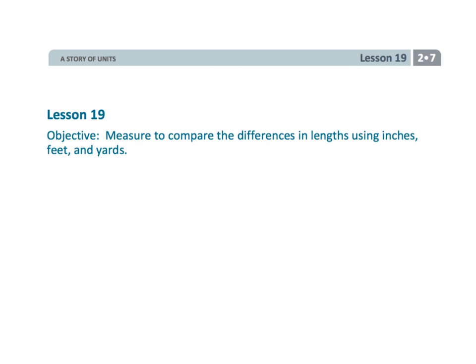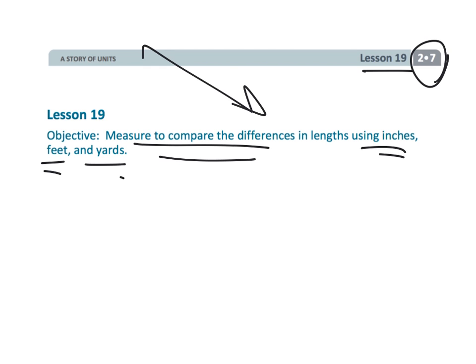And that wraps up second grade module 7 lesson 19: comparing differences but making sure that we are using our labels. In this case inches or feet or yards or centimeters.